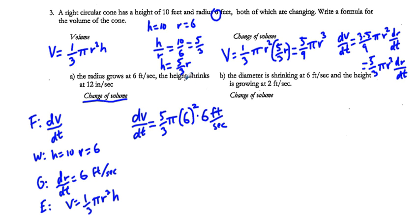For the height shrinking part, we'd have to solve the original equation for r in terms of h. Since h/r = 5/3, we get r/h = 3/5, so r = (3/5)h. Plug in three-fifths h for r and figure all that out.